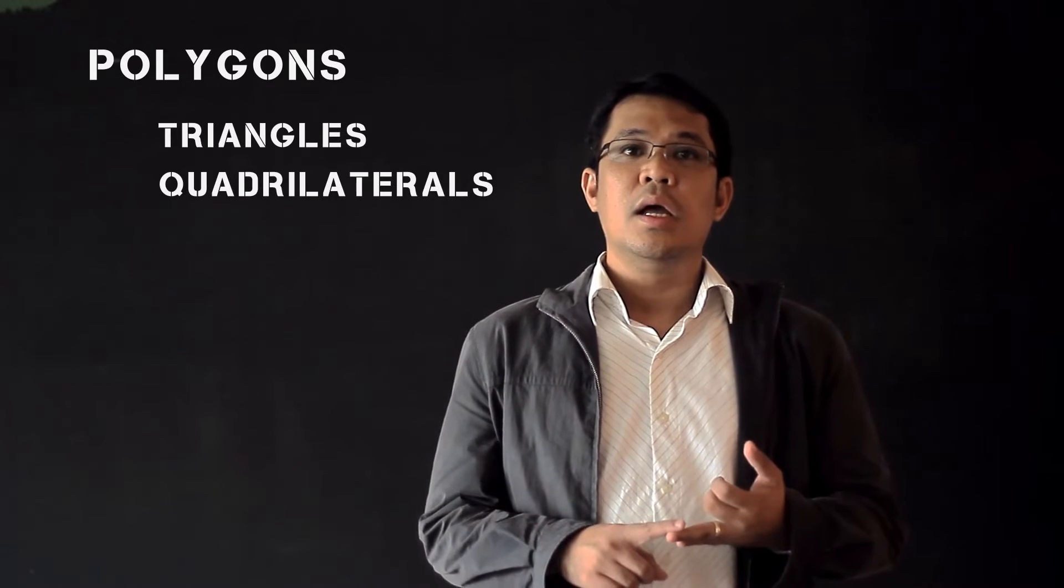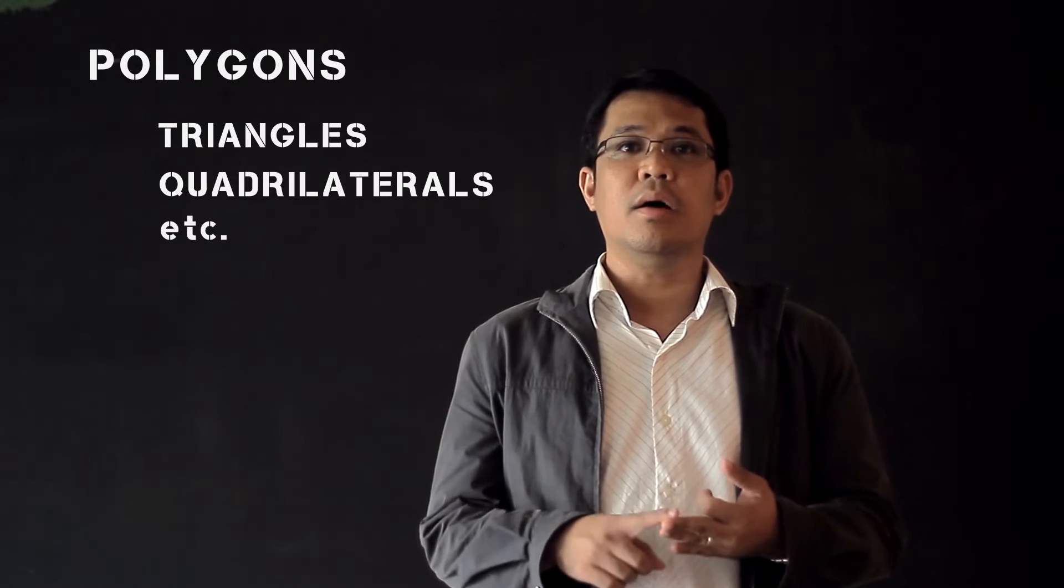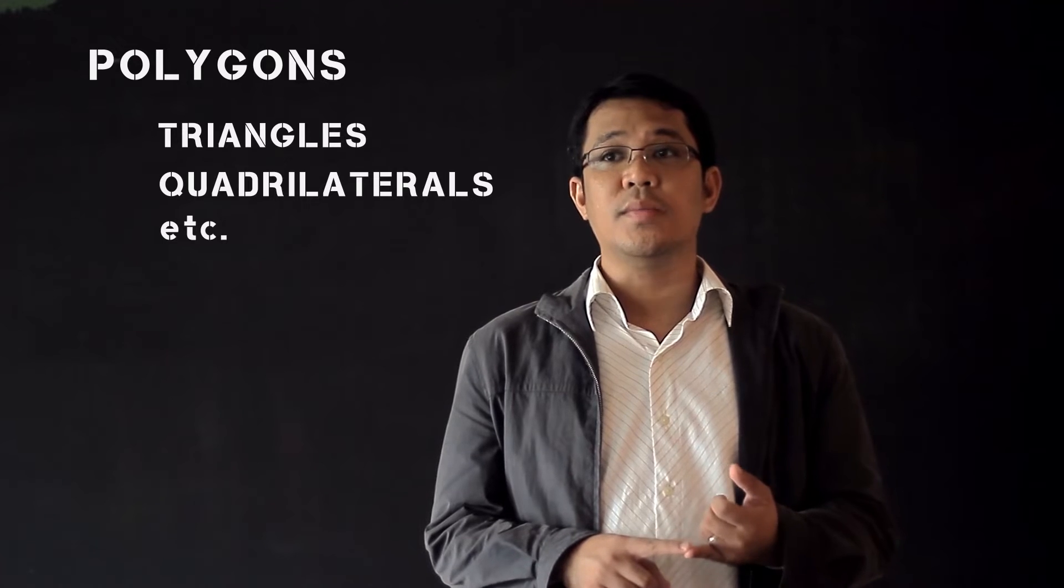Now under this part, under the first part, we will discuss polygons. And under polygons, we have several types. This includes triangles, quadrilaterals, pentagon, hexagon, heptagon, and other types of polygons.